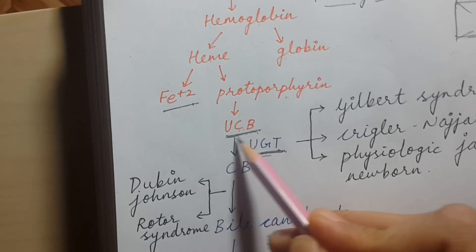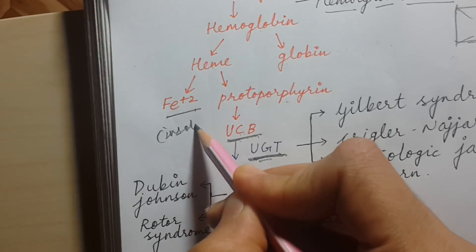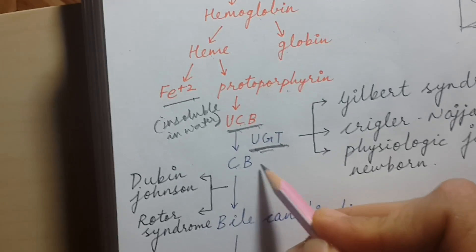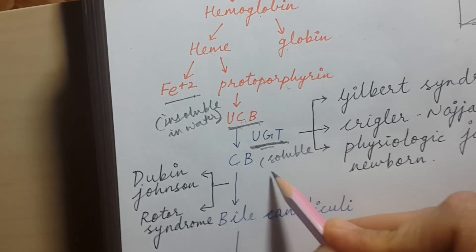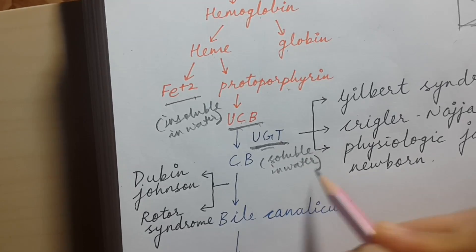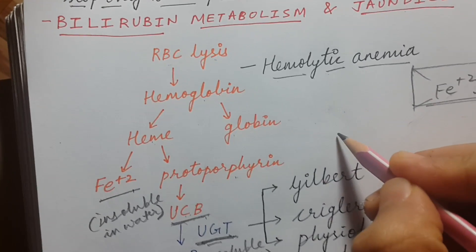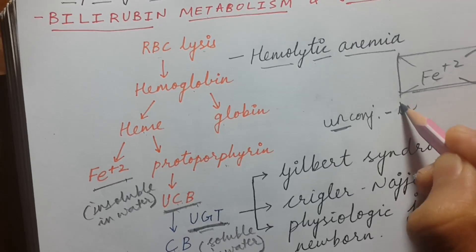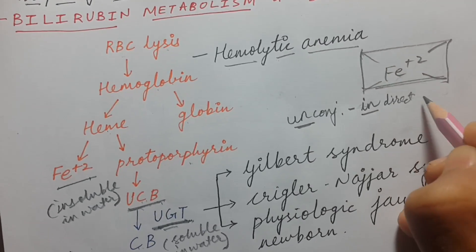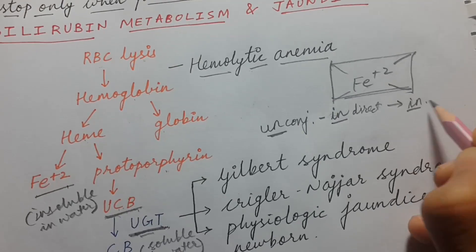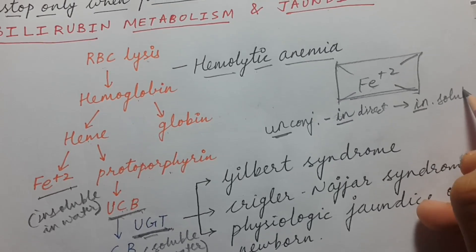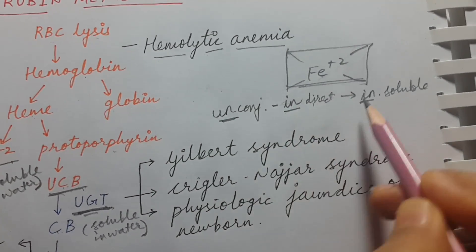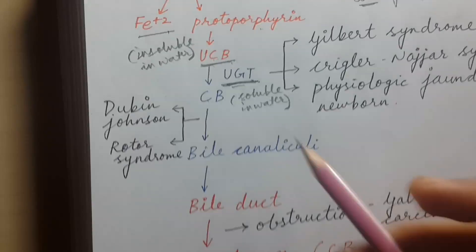The main thing is that unconjugated bilirubin is insoluble in water, while conjugated bilirubin is soluble in water. Unconjugated bilirubin is also called indirect bilirubin, and it is insoluble in water.